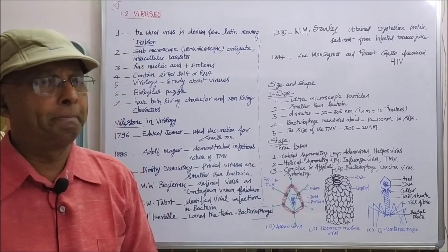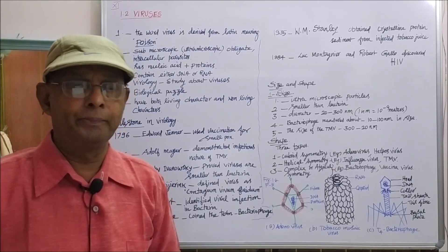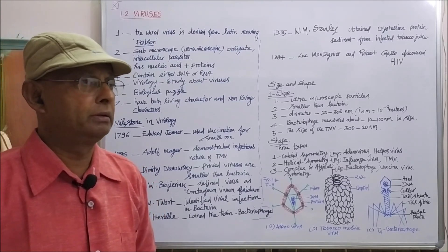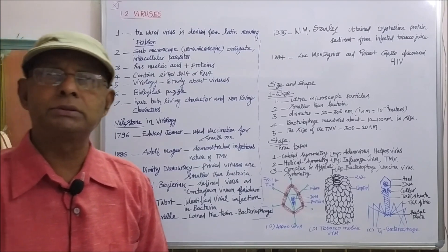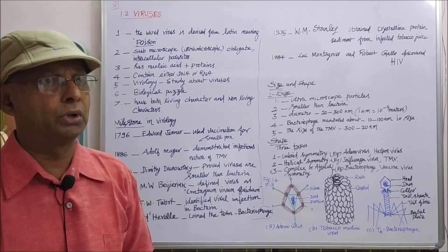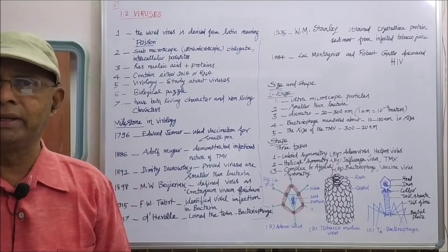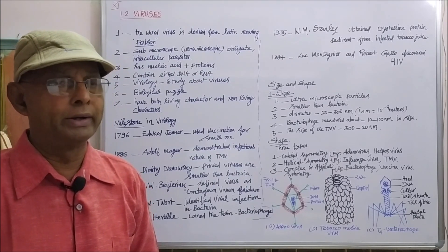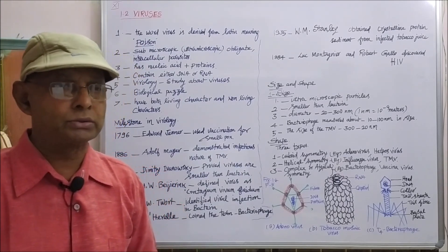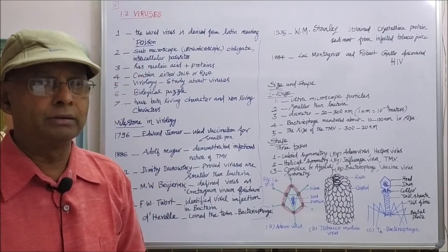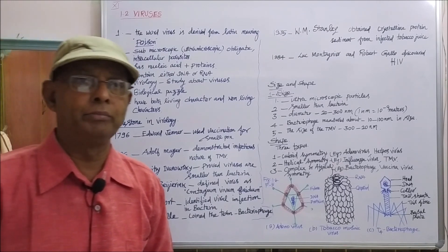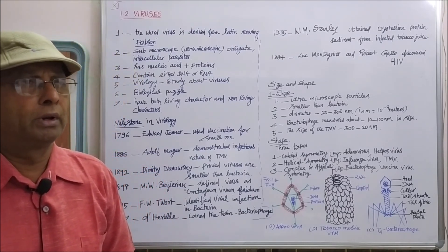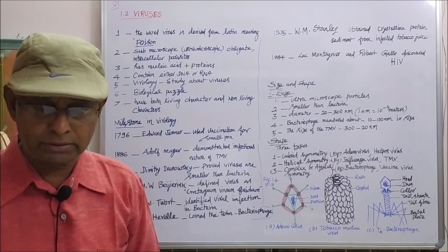Viruses are submicroscopic or ultramicroscopic obligate intracellular parasites. Submicroscopic or ultramicroscopic means they are the smallest organisms — they cannot be seen under any ordinary microscope. Only under an electron microscope can they be observed and identified.